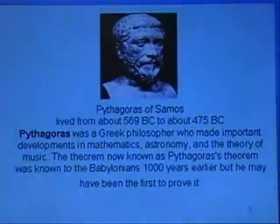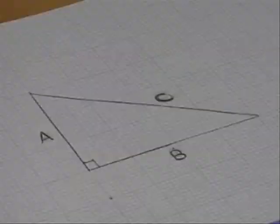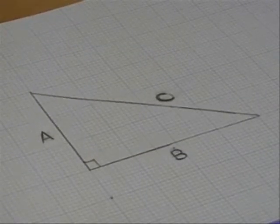This was a man who was a mathematician and lived over 2000 years ago. One day, he was looking at a triangle and noticed a pattern.